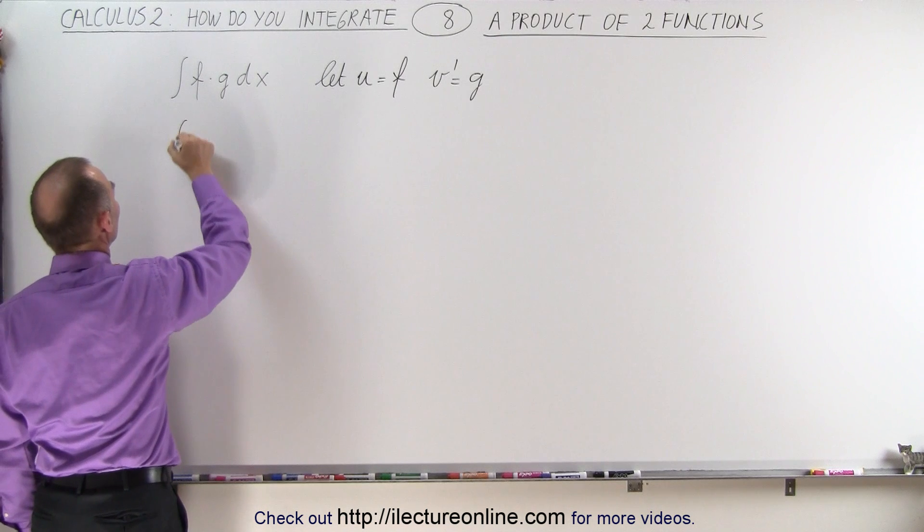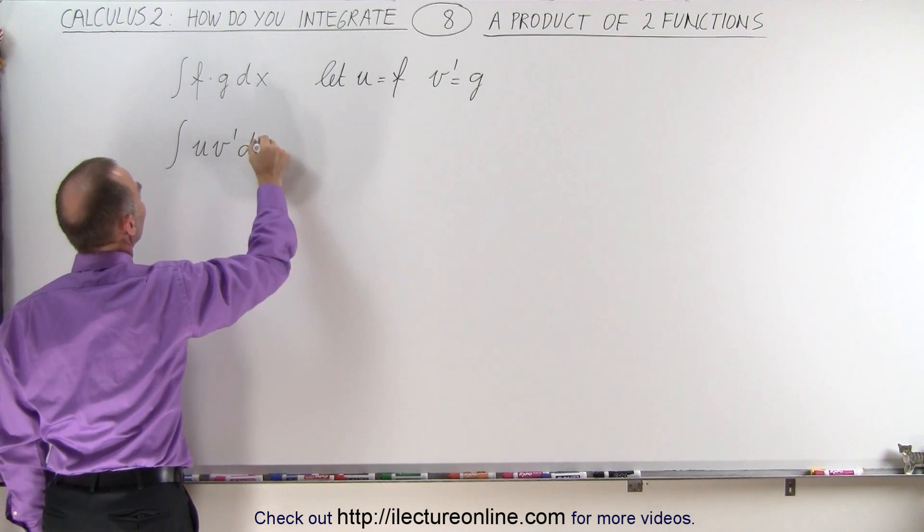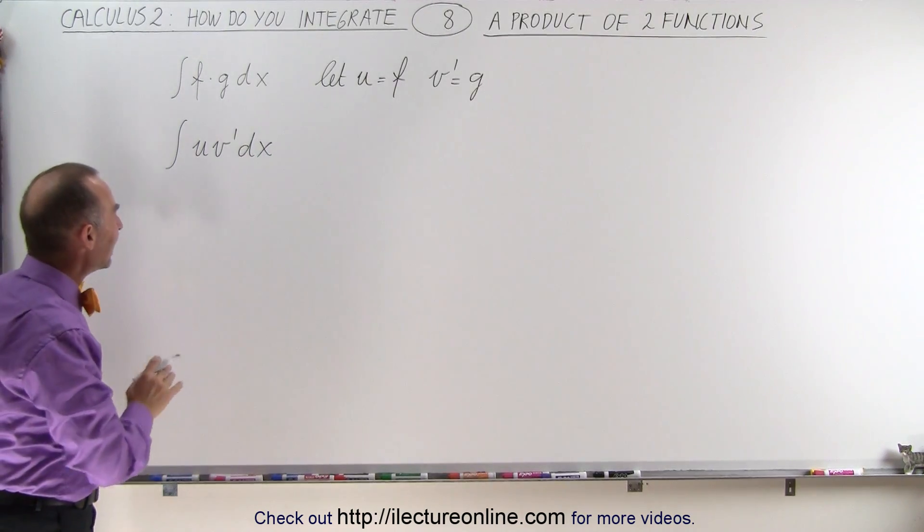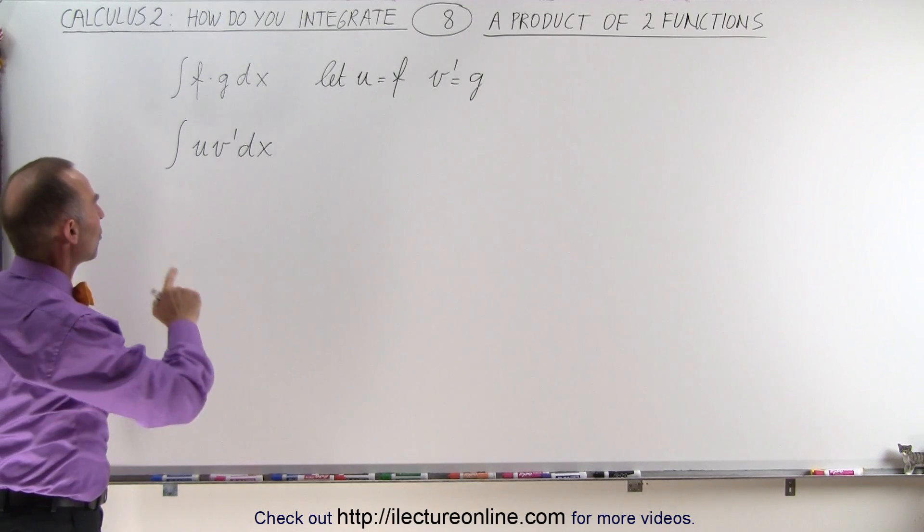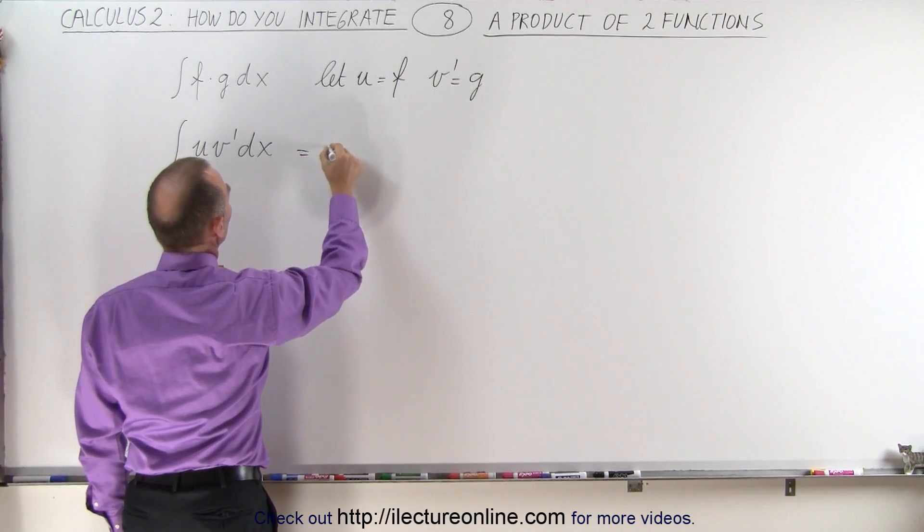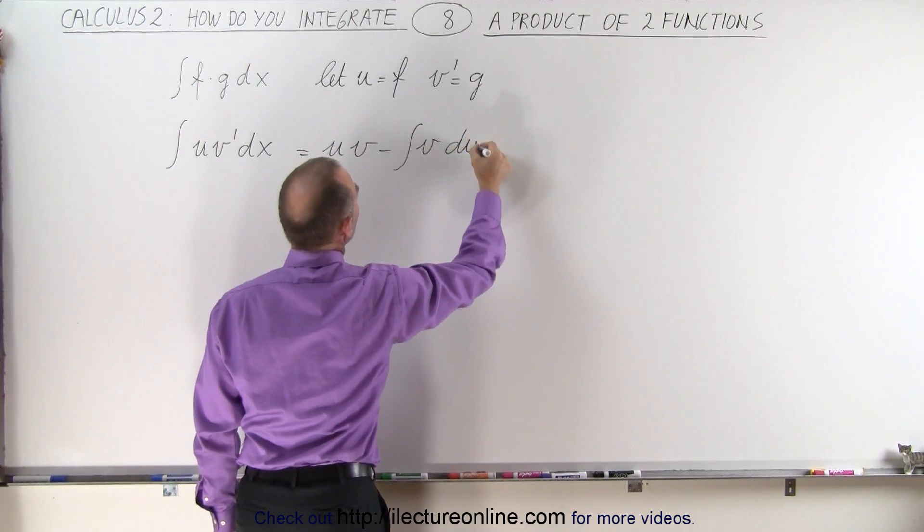Then the integral becomes as follows. This becomes uv prime times dx and this is a format you might have seen before in the technique called integration by parts. We may have memorized that the integral of this is equal to u times v minus the integral of v times du.